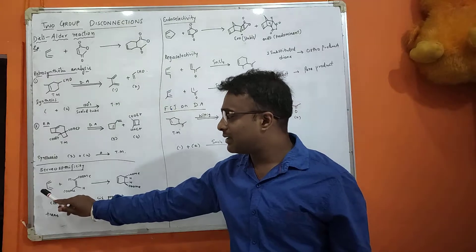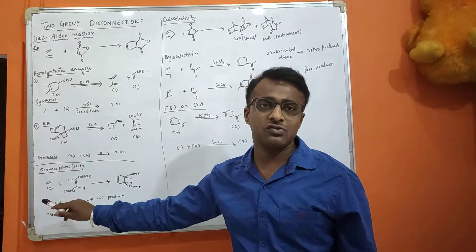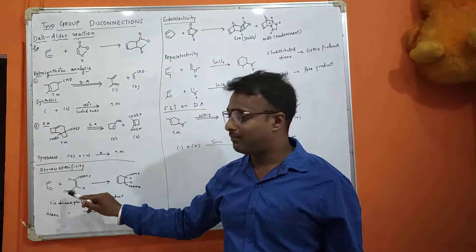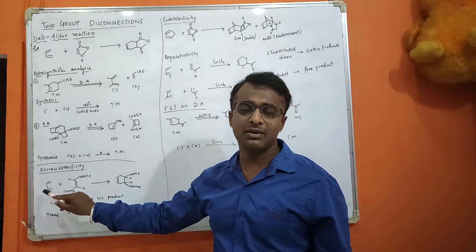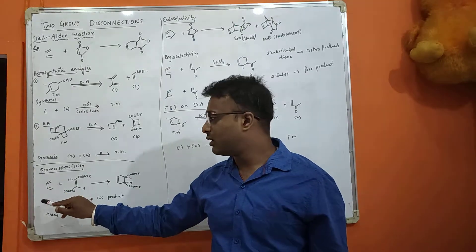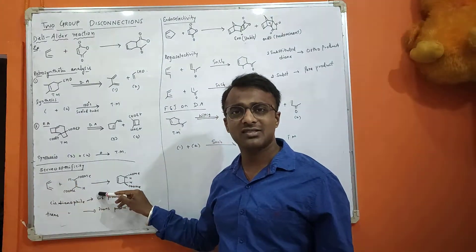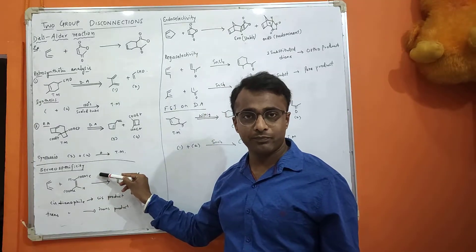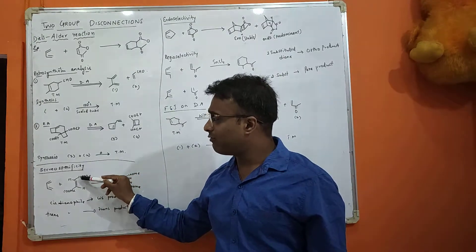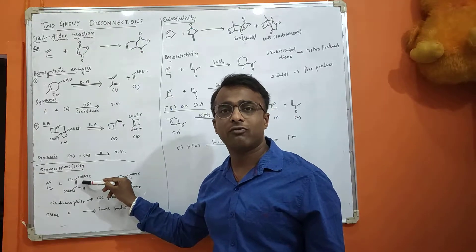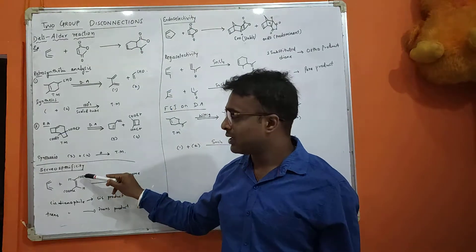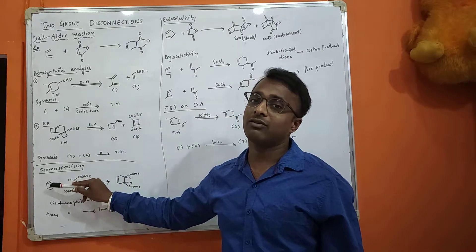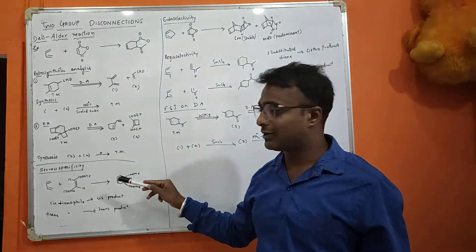Stereospecificity means the diene and dienophile stereochemistry is retained in the product. If we are using trans dienophile, this is diene—two double bonds. Di means two, ene means double bond. This is dienophile. What is the role of this electron withdrawing group? This electron withdrawing group makes the dienophile more electron deficient. As it becomes more electron deficient, it will attract the diene more effectively and you will get product more prominently.